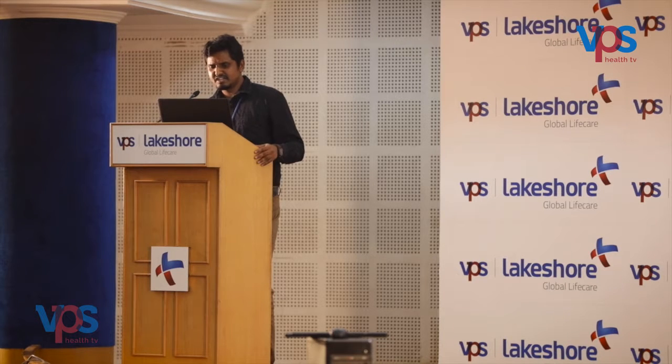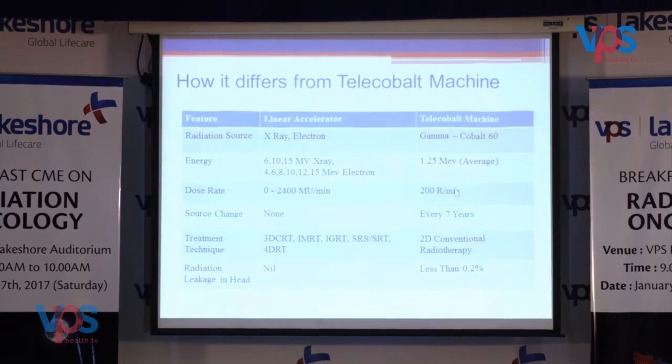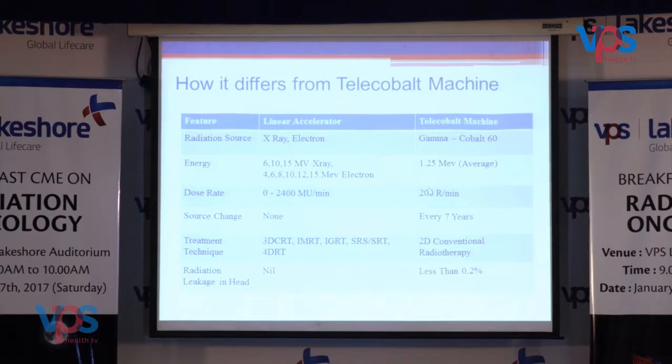Linear accelerators artificially generate radiation, giving us the option of multiple X-ray photon energies and multiple electron energies. Cobalt-60, being a natural radioactive isotope, has only a single energy. The dose rate of a linear accelerator ranges between 0 to 2400 MU/min and can be varied — the higher the dose rate, the shorter the treatment time. The maximum dose rate for a Cobalt-60 machine is around 200 MU/min when the activity is high, and this dose rate decreases over time as Cobalt-60 decays.